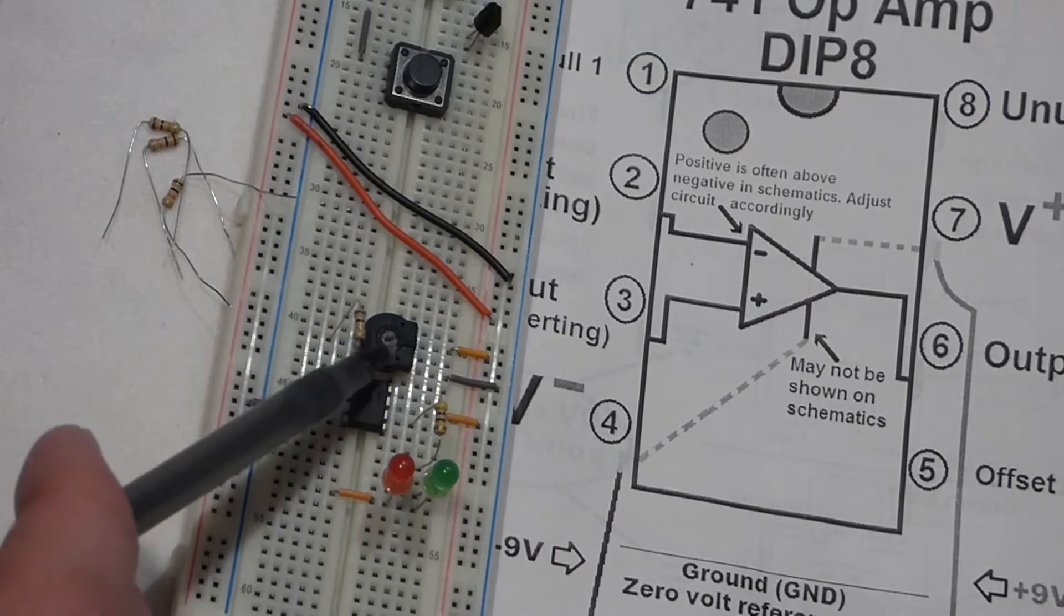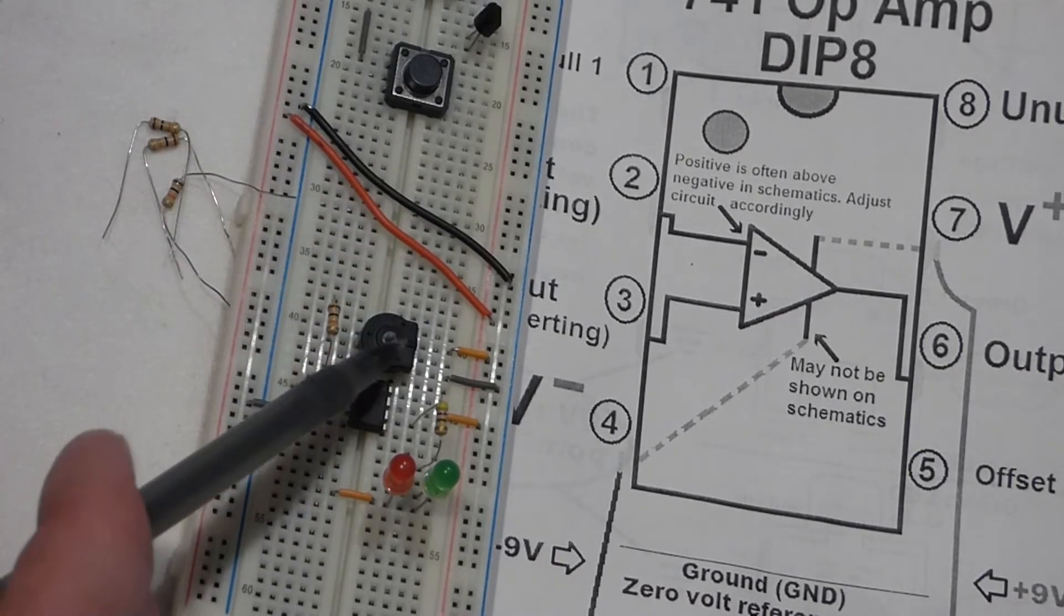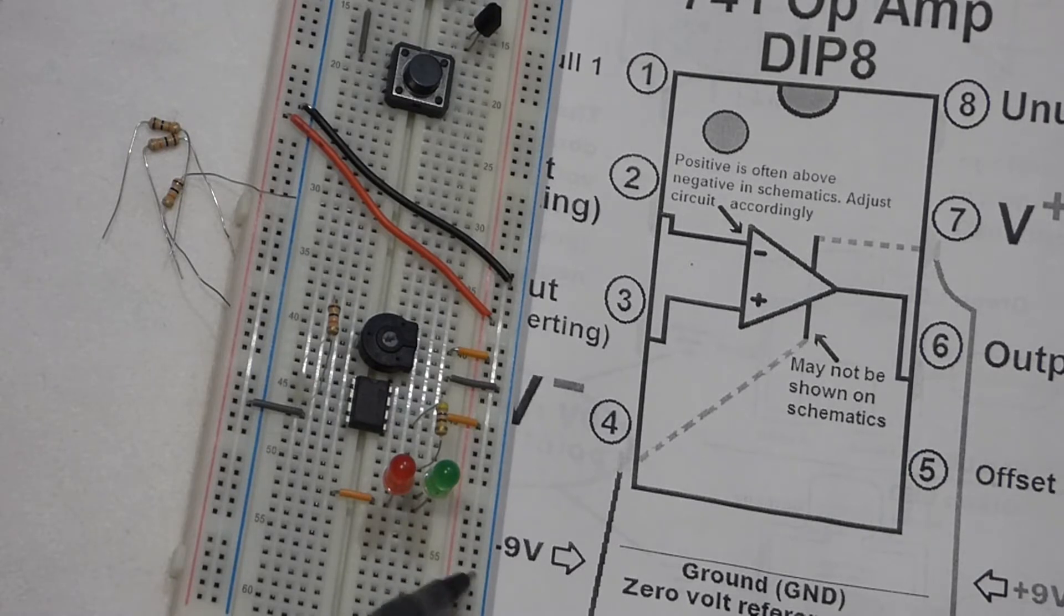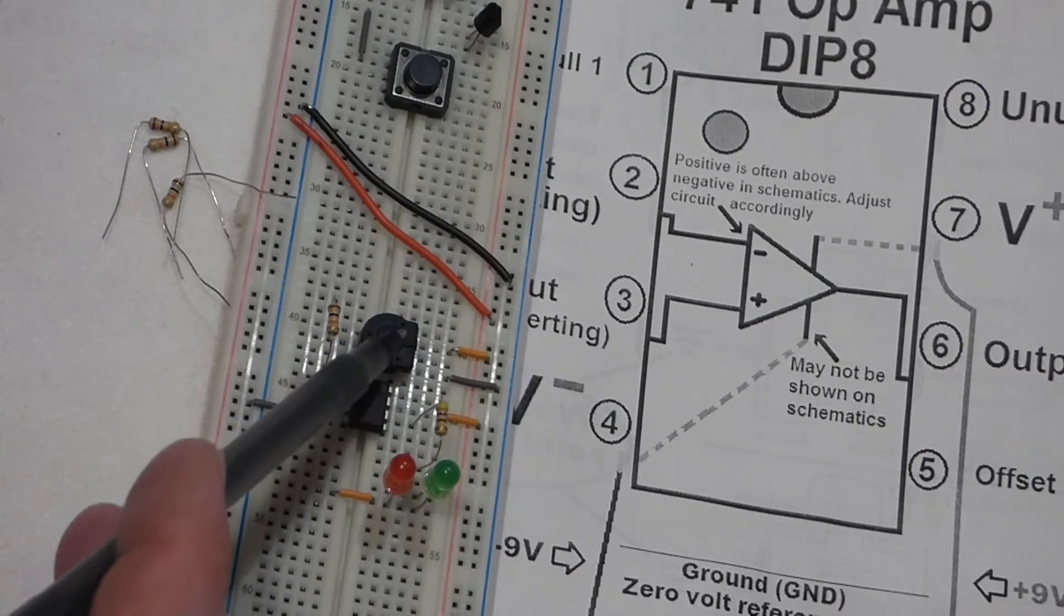So to begin with, we have this 5 kilo ohm trim pot. We're going to be using two 9 volt batteries to alternate the current. They both are in series as far as this trim pot is concerned.